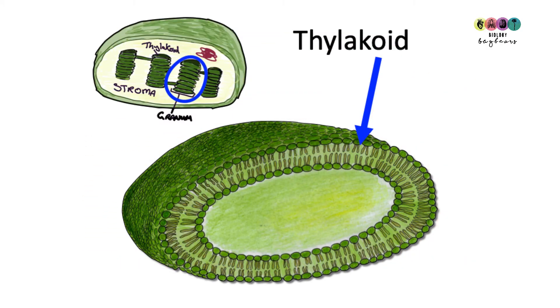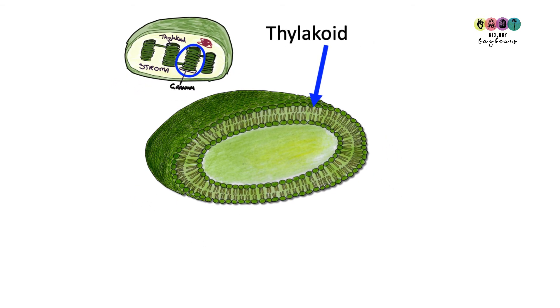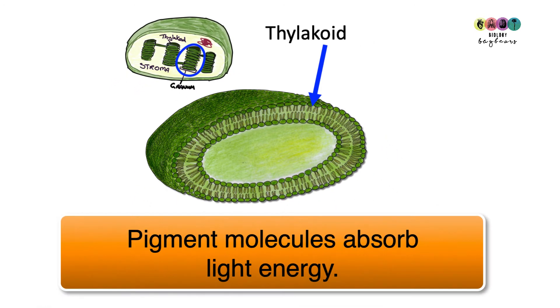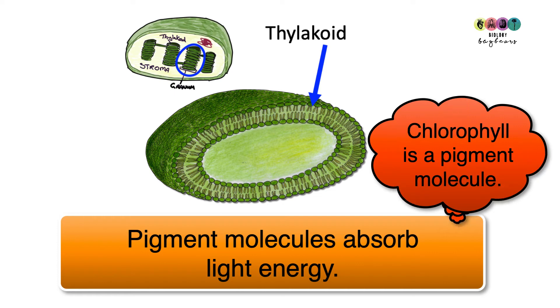The light stage reactions take place in the grana, which are stacks of thylakoids in the chloroplast. It's important to look at one particular thylakoid just to see the arrangement of pigment molecules. Pigment molecules are these chemicals that can absorb light energy, such as chlorophyll being the most important.